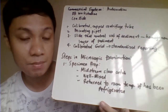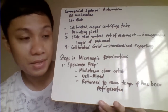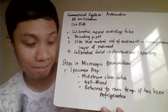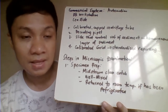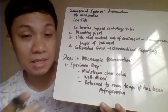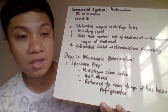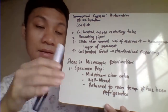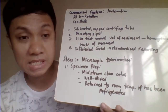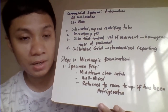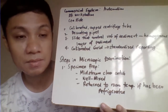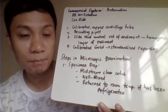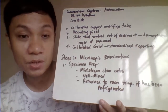When you receive the specimen in the laboratory — this pertains to the manual procedure — you need to mix it before you transfer it to your centrifuge tube for centrifugation. The specimen must be well-mixed to allow sediments that have settled at the bottom of the specimen cup to mix throughout the entire specimen, in order to reflect the true concentration of the sediments and provide a true reflection of the patient's urine sample.